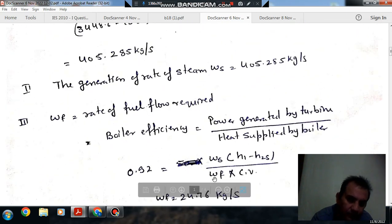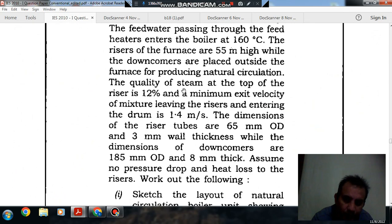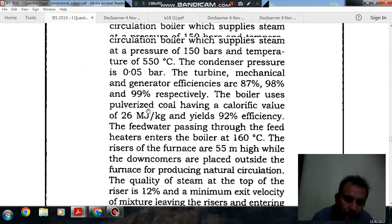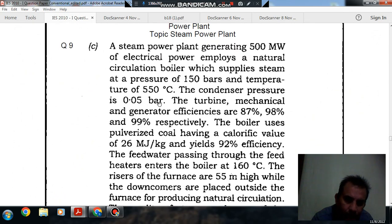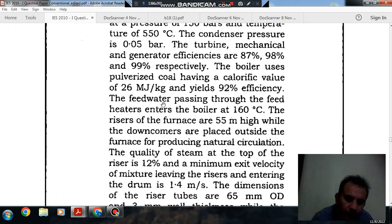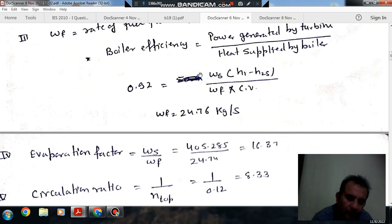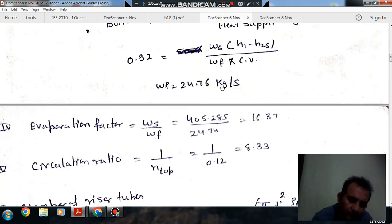Next is to find fuel flow rate. Heat supplied by the boiler is omega F into calorific value. Omega F is what we have to find out and calorific value is 26 MJ and boiler efficiency is 92%. We can find out omega F comes out as 24 kg per second.